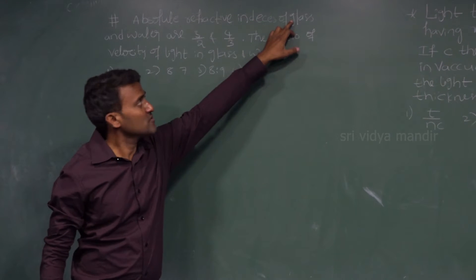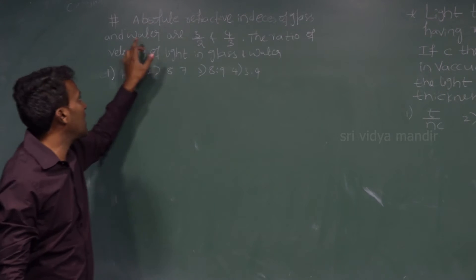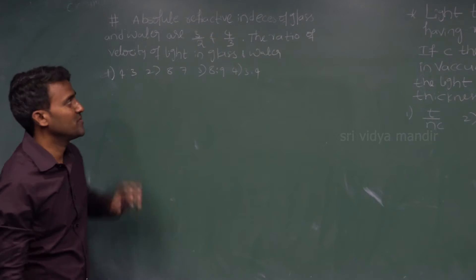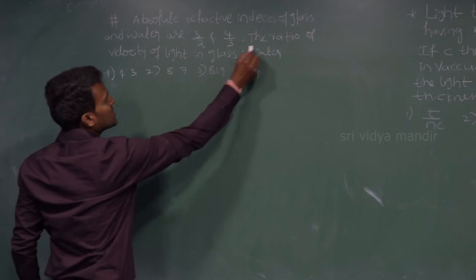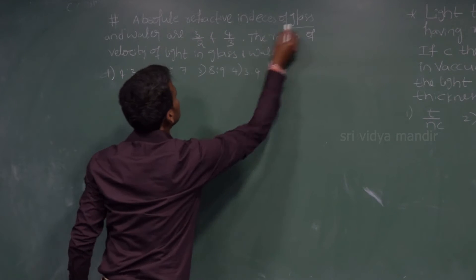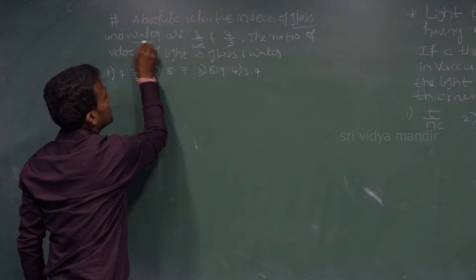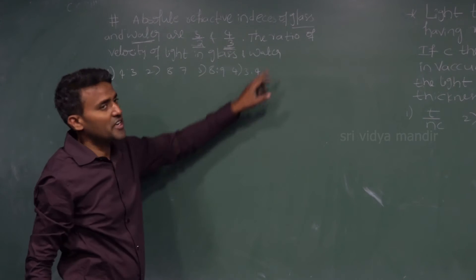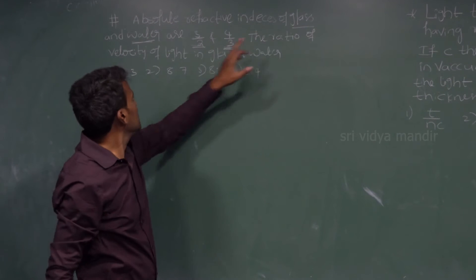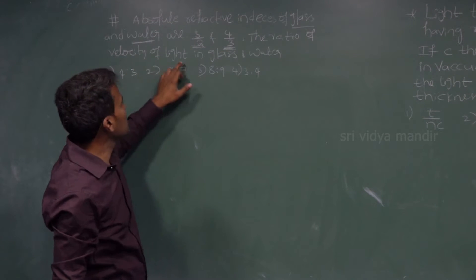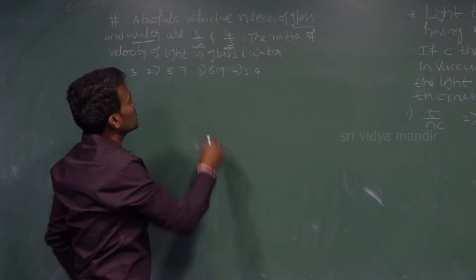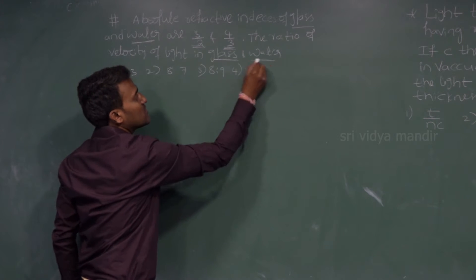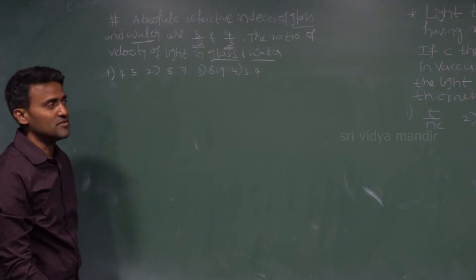The absolute refractive indices of glass and water are 3/2 and 4/3 respectively. We have to calculate the ratio of the velocity of light in glass to water.